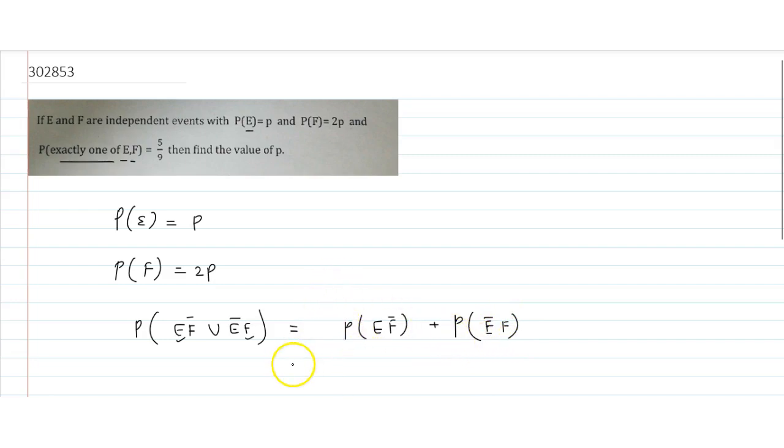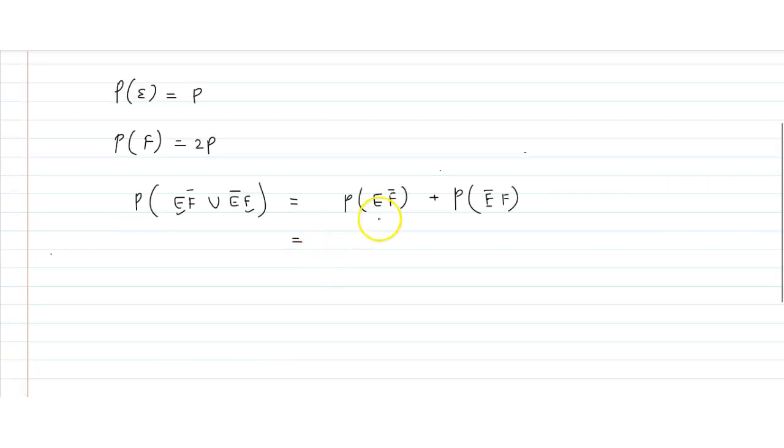What form does this take? We write this as equal to: E is occurring, so P of E minus P of E intersection F, plus F event is occurring, so it becomes P(F) minus P(E intersection F).